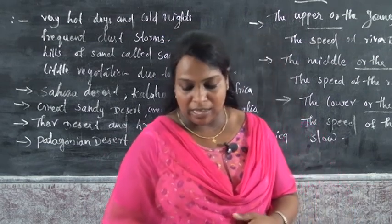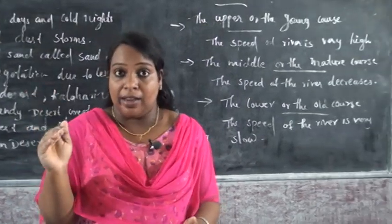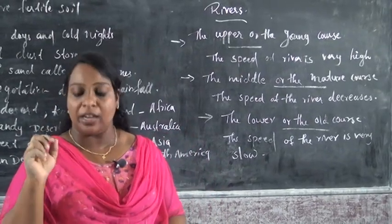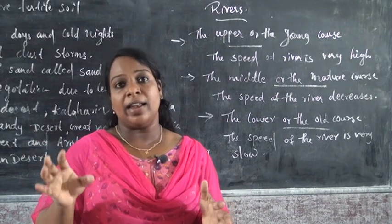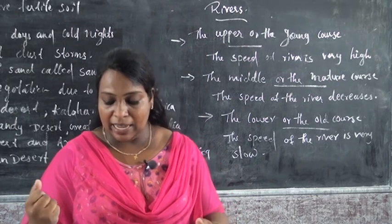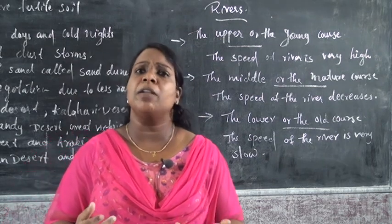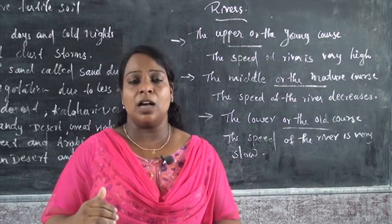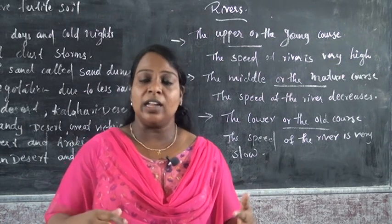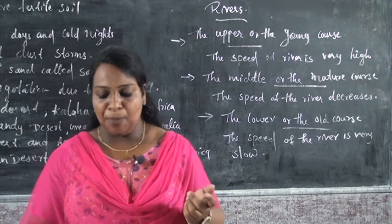In the upper or young course, most rivers originate in the Himalayas. During this stage, the speed of the river is very high. Features include waterfalls, canyons, and rapids — where water flows fast over rocks. That is the first feature of the upper young course: rivers originate in the mountains and the speed is very high.